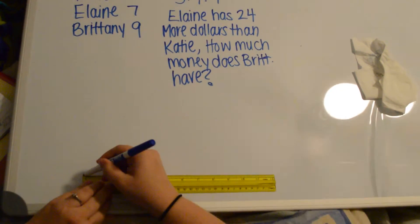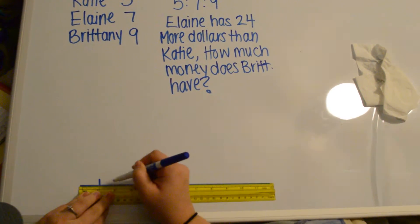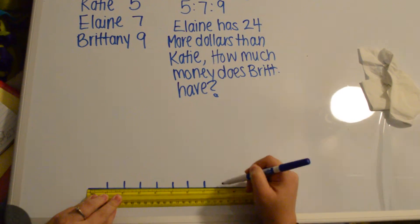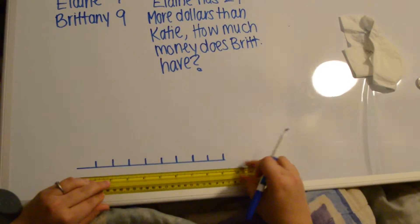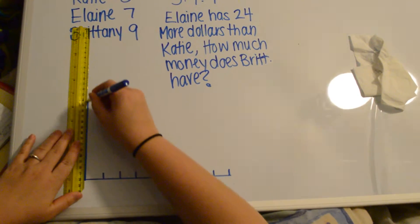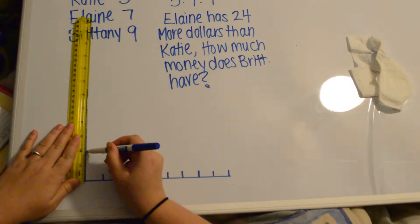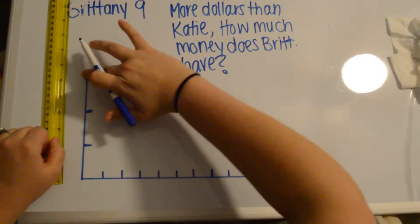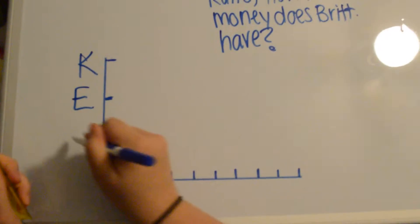So we're going to use our ruler here, and we're going to go 1, 2, 3, 4, 6, 7, 8, 9. And we're going to go up 1, 2, 3 because we've got Katie, Elaine, and Brittany.